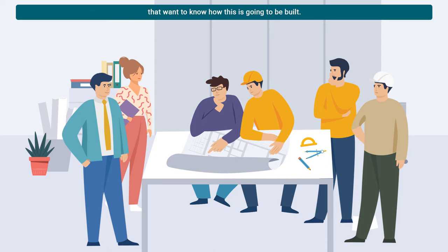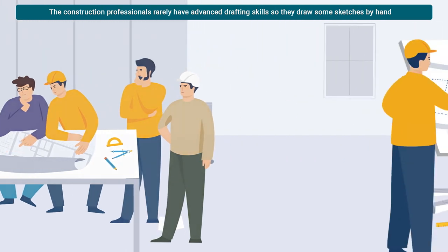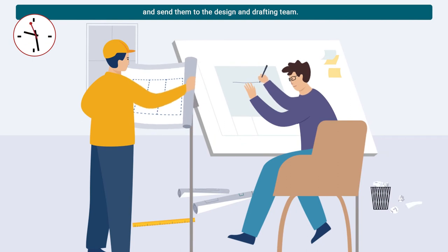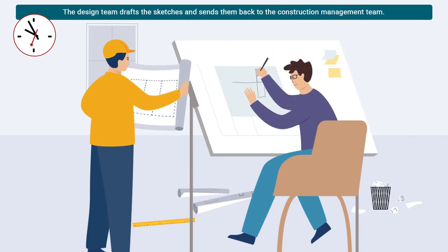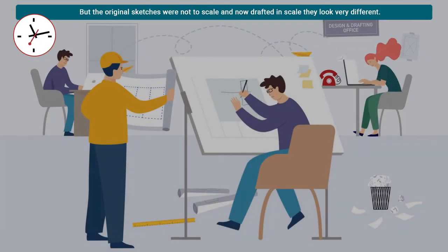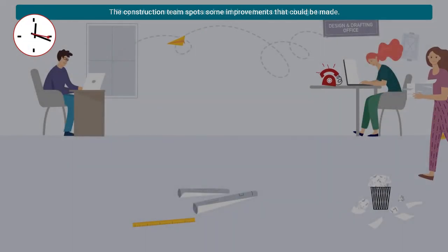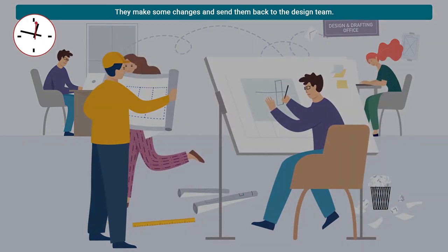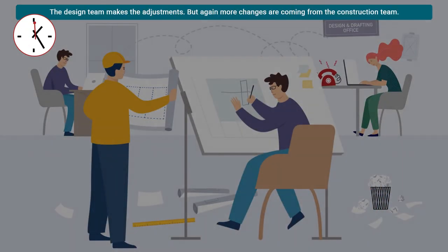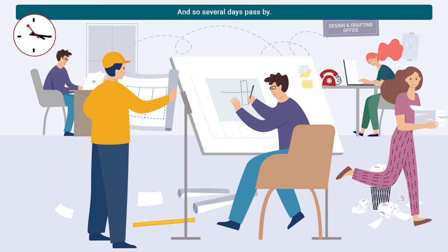The construction professionals rarely have advanced drafting skills, so they draw some sketches by hand and send them to the design and drafting team. The design team drafts the sketches and sends them back, but the original sketches were not to scale and now drafted in scale they look very different. The construction team spots some improvements, makes some changes and sends them back to the design team, who makes the adjustments — but again more changes are coming and so several days pass by.